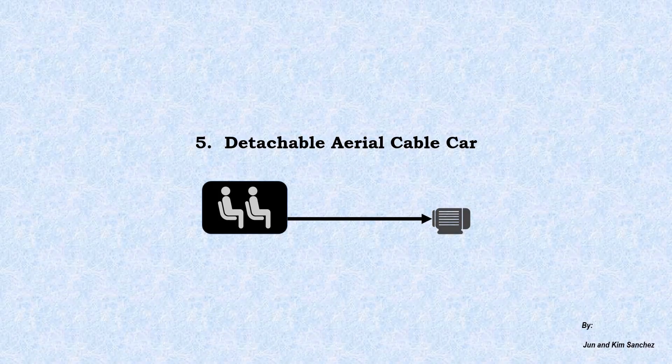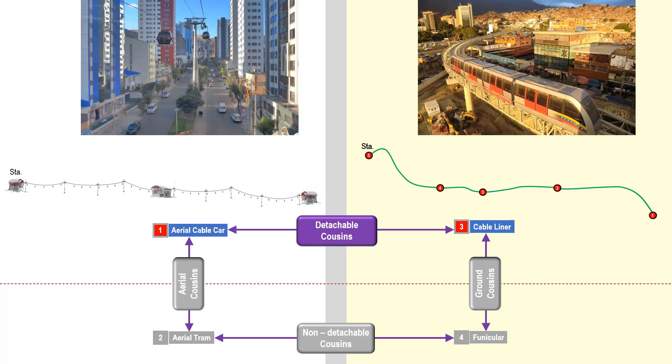Detachable aerial cable car. In CPT systems, there are two of the four major types that are detachable. They are the aerial cable car and the cable liner, known as the detachable cousins. In this chapter, we will look at how detachable ART works.